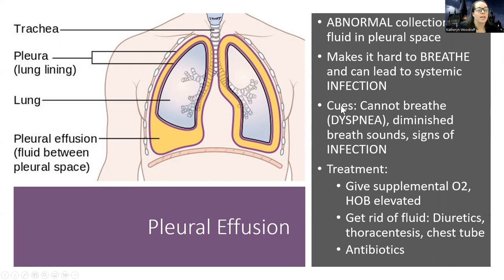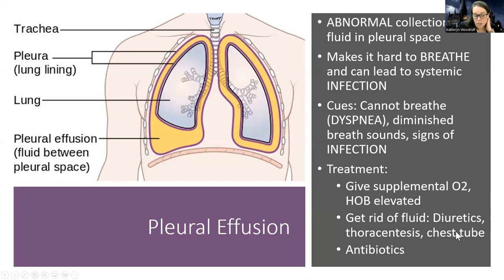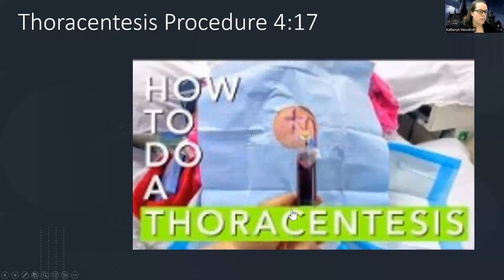Cues that your pneumonia patient is developing a pleural effusion: worsening dyspnea, very diminished breath sounds at the bottom lung spaces, and new or worsening signs of infection. Treatment includes supplemental oxygen, elevating the head of bed, and getting rid of the fluid through diuretics, thoracentesis, or a chest tube if there's excess or continuously accumulating fluid. If it's infected, get a culture and consider antibiotics. Pleural effusion can usually be seen on chest X-ray.